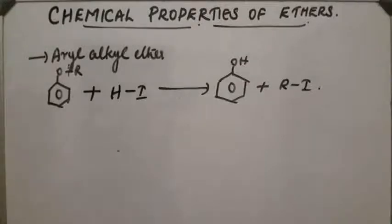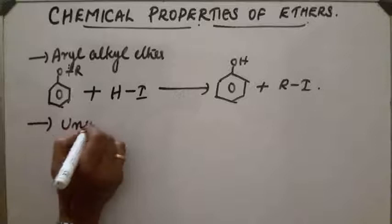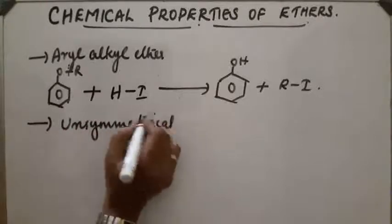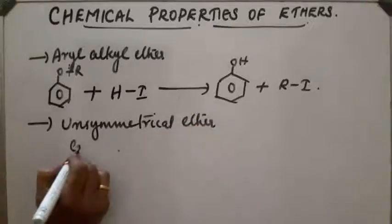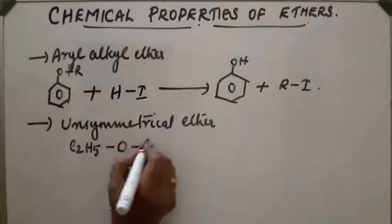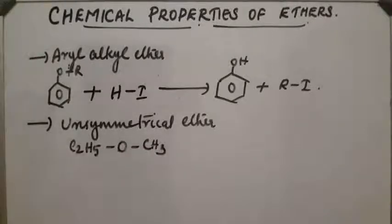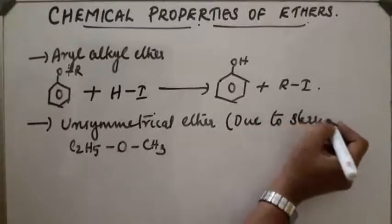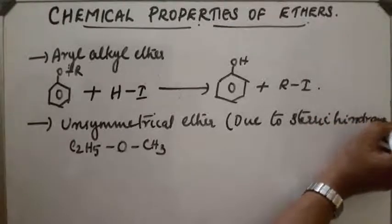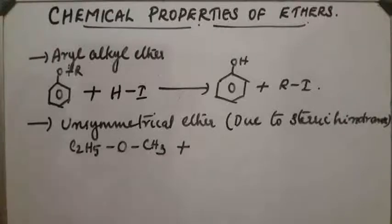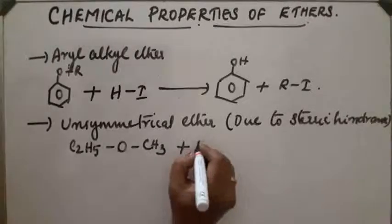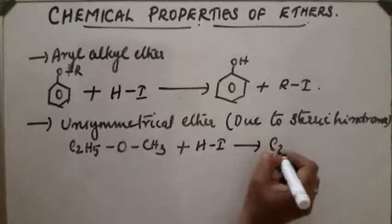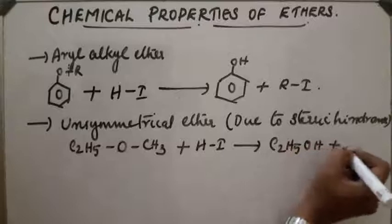The second case is an unsymmetrical ether. For example, C2H5-O-CH3 (ethyl methyl ether). In this case, the iodide or halide ion moves toward the smaller hydrocarbon part due to steric hindrance — the halide attacks the least substituted carbon. On reaction with HI, this gives C2H5OH plus CH3I.